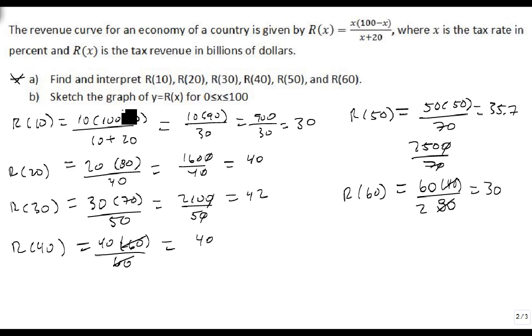Our next step is to sketch this. Notice that we have an asymptote of minus 20, and we have a zero at 0 and at 100.